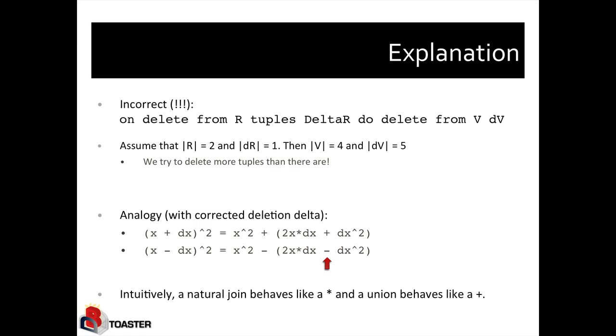So why is that? Assume that R actually contains one tuple only, no matter what the tuple is, but it has multiplicity two for that tuple. It contains that tuple twice. And let's assume that we are inserting yet another copy of that same tuple. So after inserting that, we would have the same tuple three times in there.